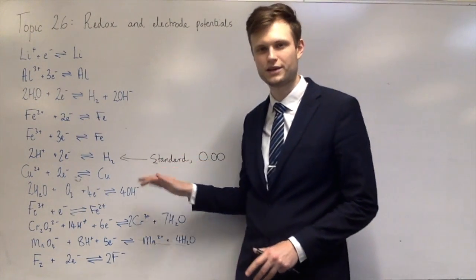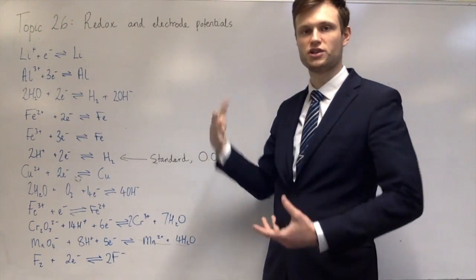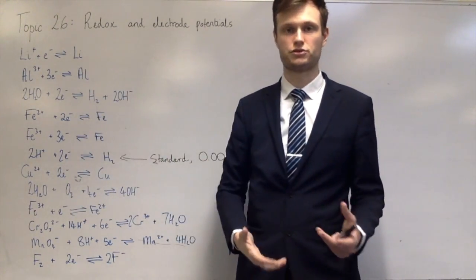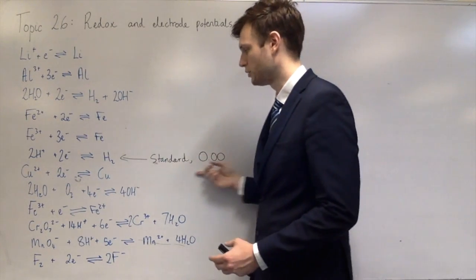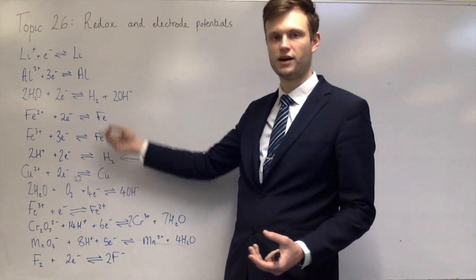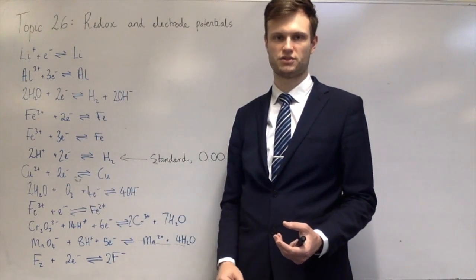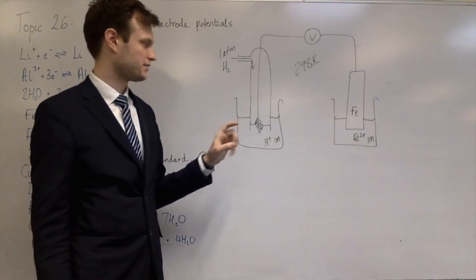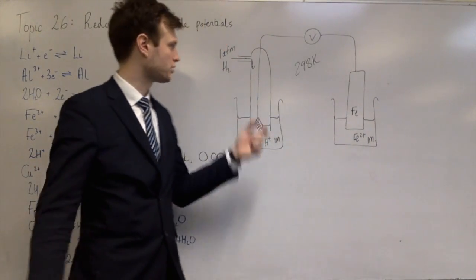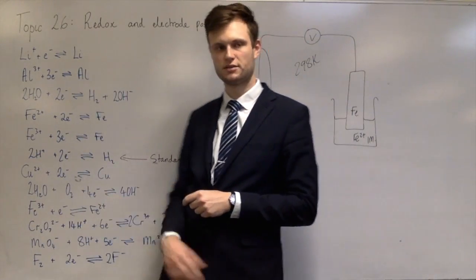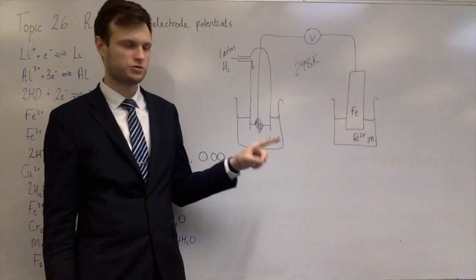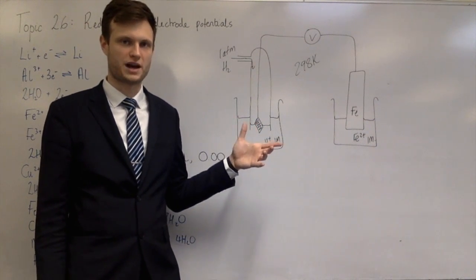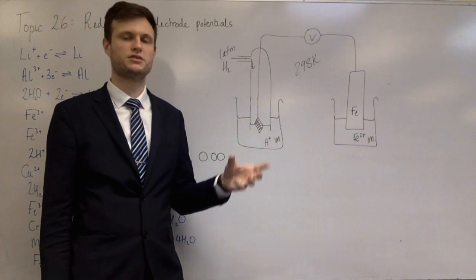To measure the standard electrode potential, you use the standard hydrogen electrode as one half-cell and the other reaction as the second half-cell. On one side is the standard hydrogen electrode, which has H+ and hydrogen gas. The electrode is made of platinum so it doesn't interfere with the reaction — platinum is very inert. A platinum electrode is used for any half-cell which doesn't contain a metal.